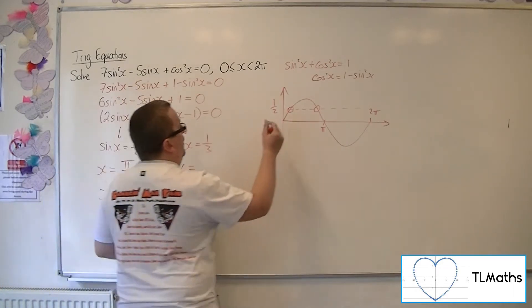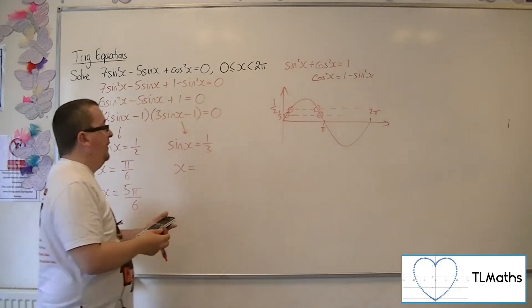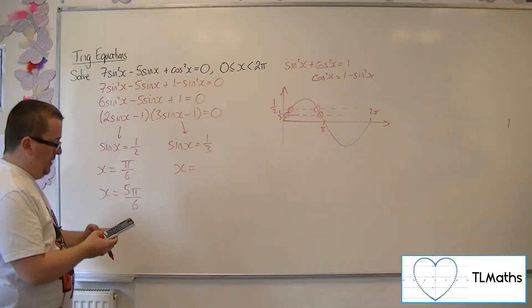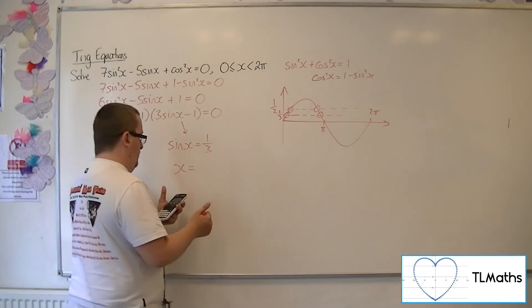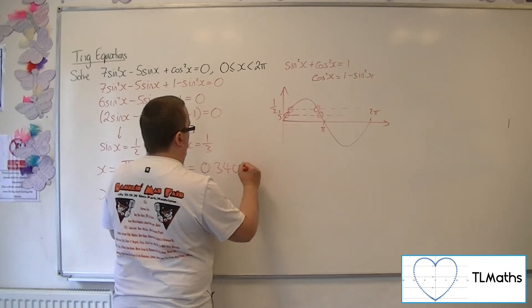As for sinx = 1/3, we'll be expecting two solutions again. Inverse sine of 1/3 is 0.340 to 3 significant figures, so that's the first solution.